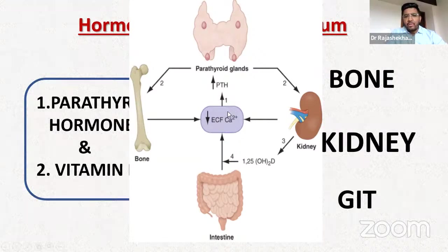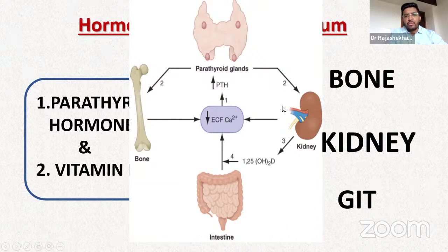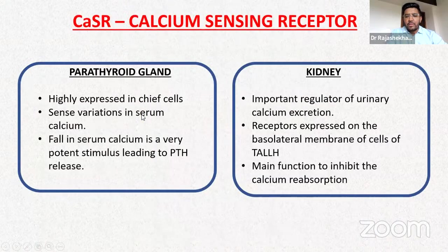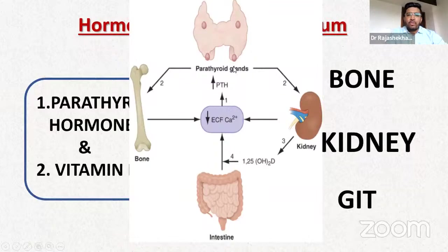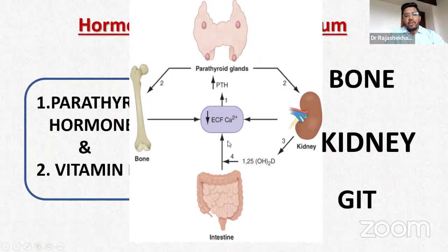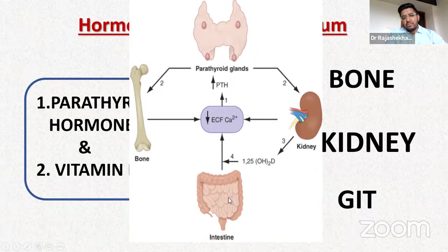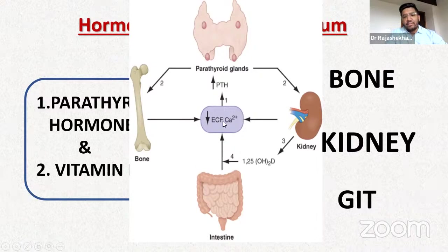Any significant drop in ECF calcium is a potent stimulus for the parathyroid glands to increase PTH secretion. PTH acts directly on two organs: bone, increasing osteoclastic activity causing bone resorption; and kidney, increasing calcium reabsorption. The effect on the GIT is indirect — it is through vitamin D increasing calcium absorption from the gut. An important exam point: PTH acts directly on bone and kidney only; its effect on the intestine is indirect via vitamin D, not direct parathyroid hormone action.